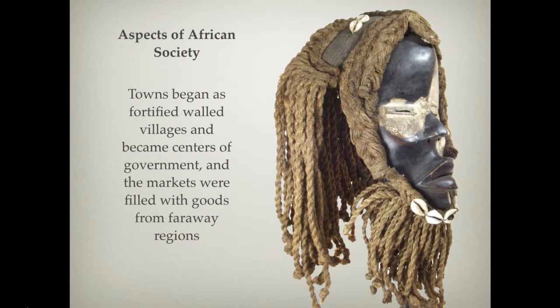The aspects of African society can be boiled down to a few factors, but it's all focused around the family unit, the village unit, and towns in general. Towns began as fortified, walled villages, and they became centers of government and markets where people filled with goods from faraway regions would trade and interact. In these spaces, we really see the placement of the family, trade goods, and the cultural ideals common among the African regions.